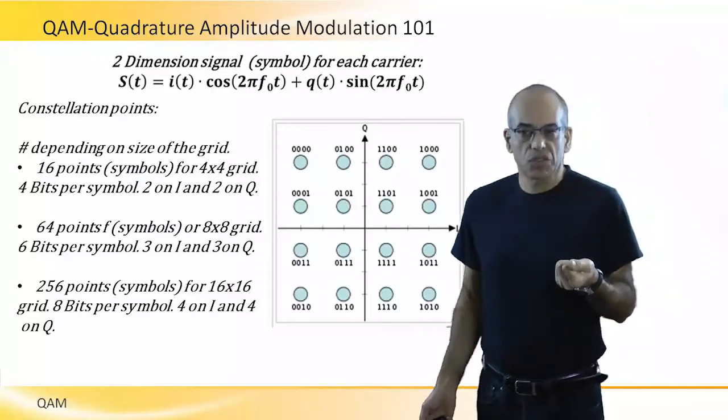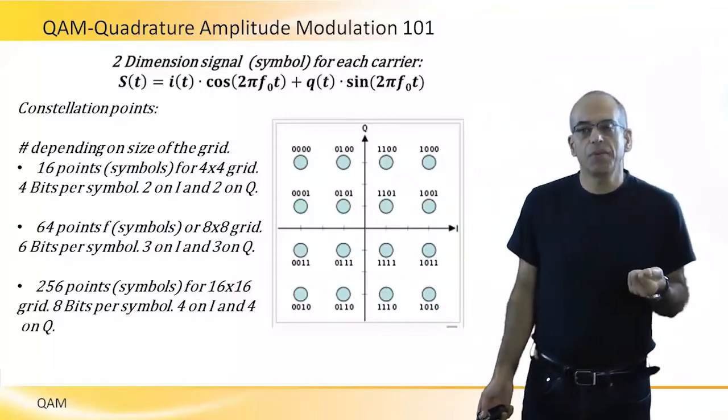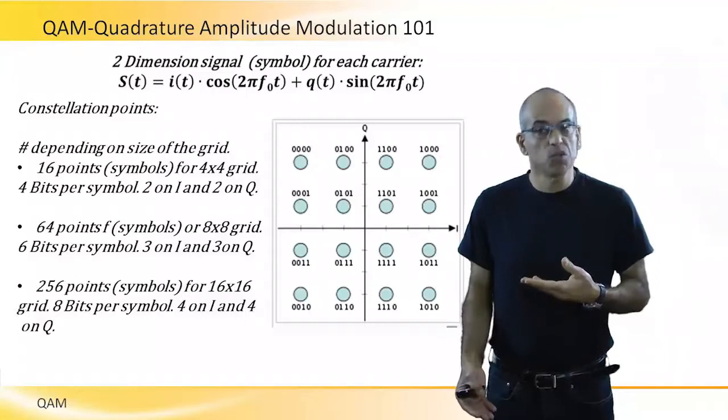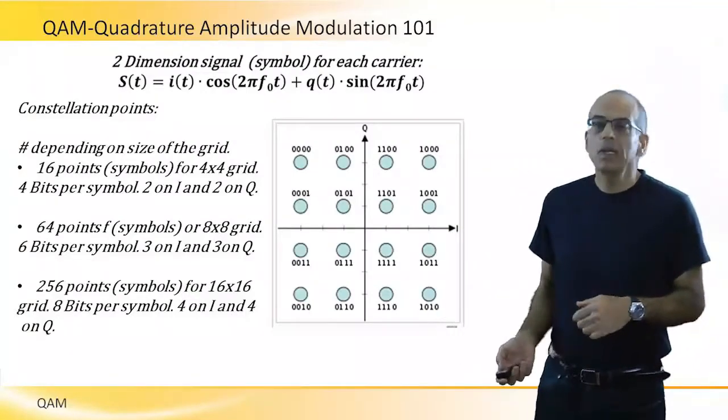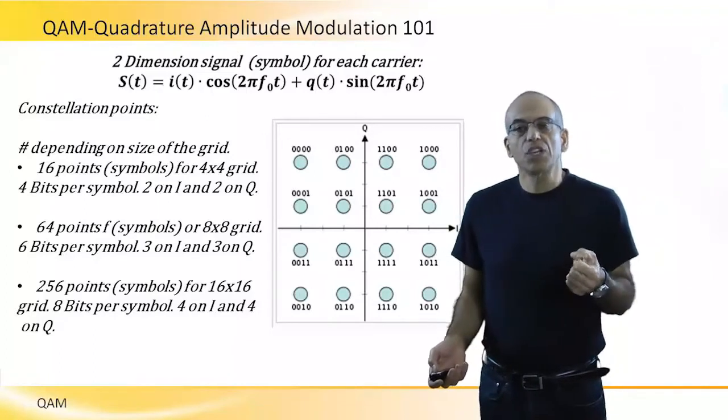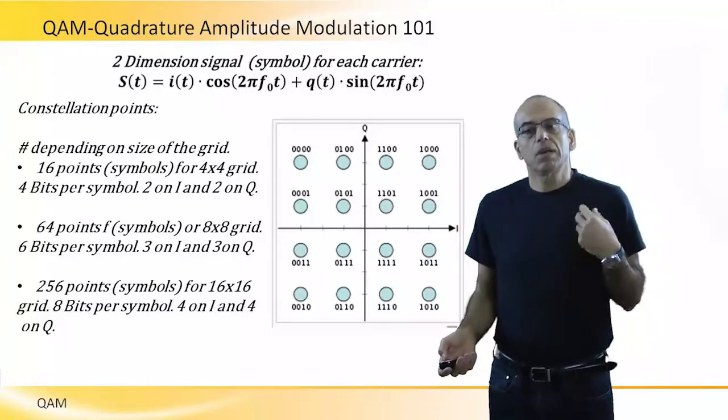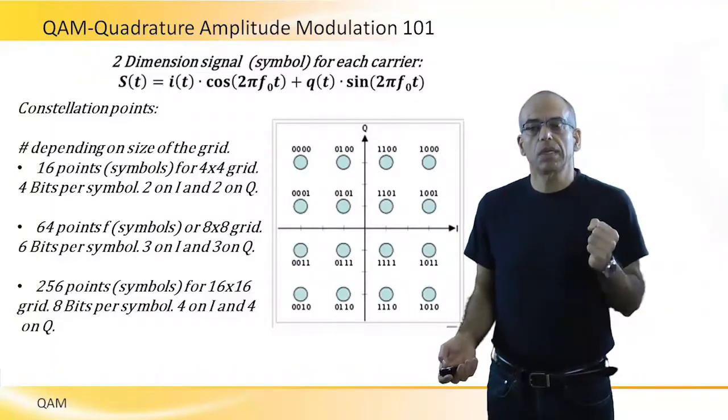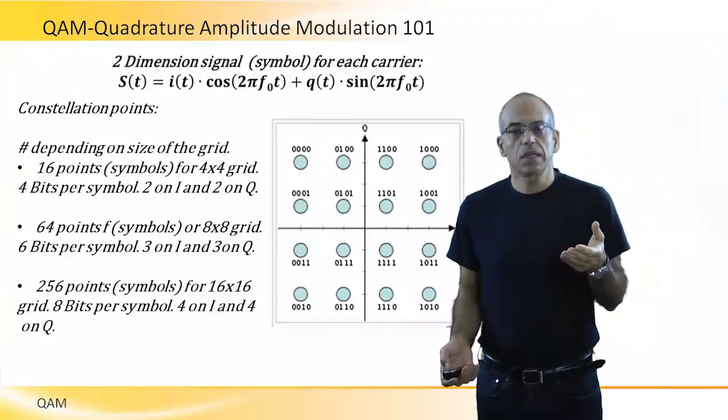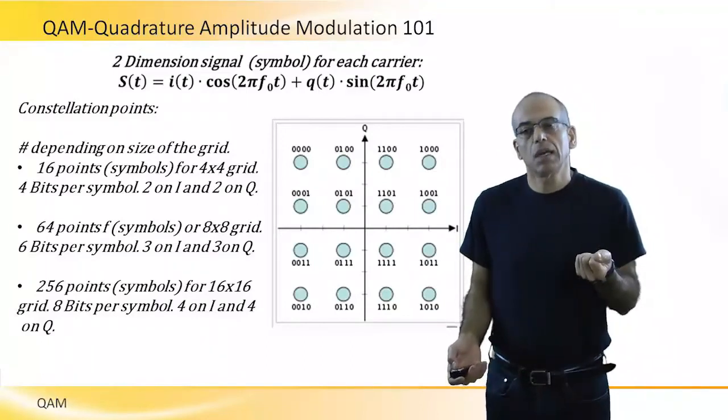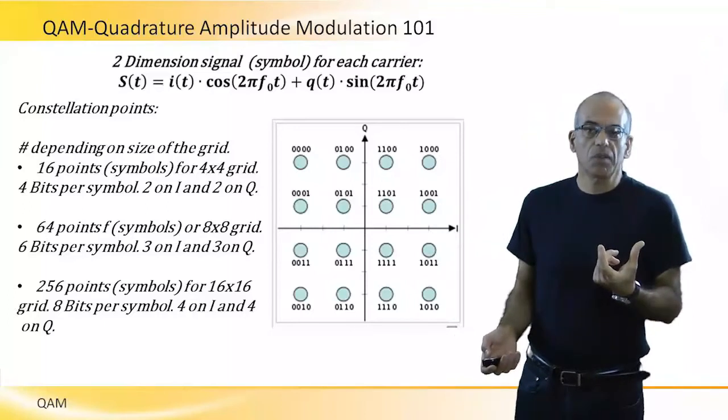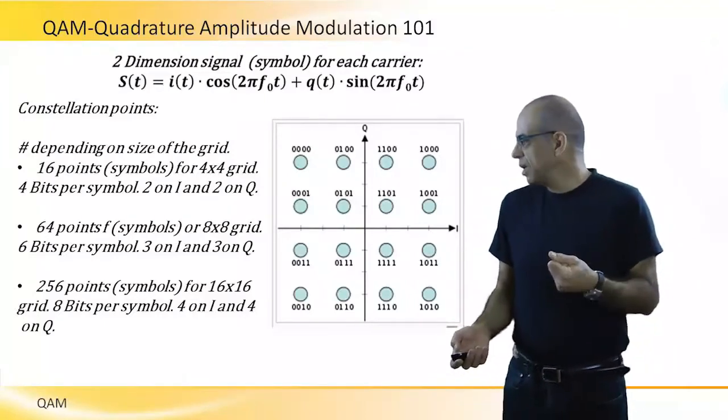The I and Q values create a constellation map that depends on the level of depth we want to give the QAM modulation. In this example we see 16 points that represent QAM 16, where each point in the constellation map represents a different symbol. In the case of 16 QAM, each point can represent 4 bits of data, where 2 bits are coming from the I value and 2 bits from the Q value.